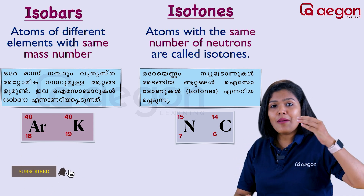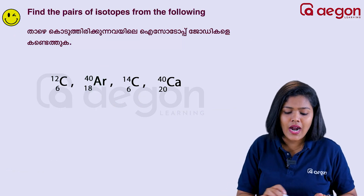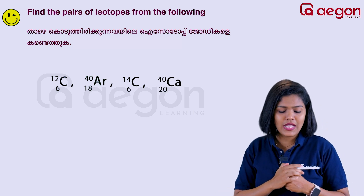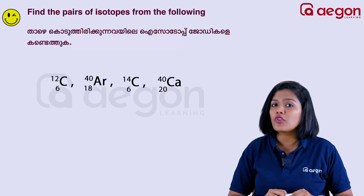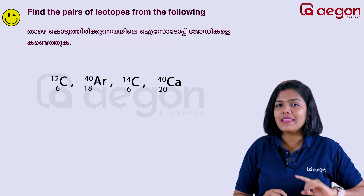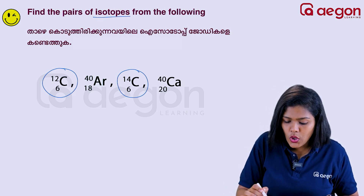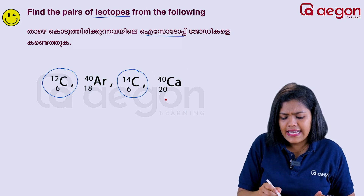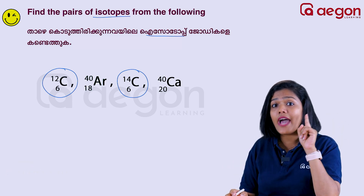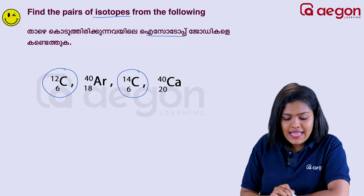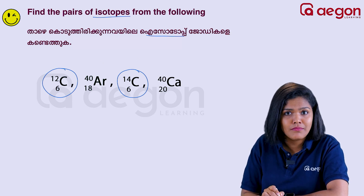For the exam, let's discuss two questions. Find the isotopes from the following: carbon-6-12, argon-18-40, carbon-6-14, calcium-20-40. Isotopes have the same atomic number but different mass numbers. Carbon-6-12 and carbon-6-14 are examples of isotopes. Argon-18-40 and calcium-20-40 have different atomic numbers but the same mass number — those are isobars.